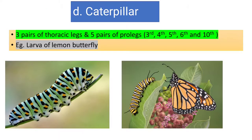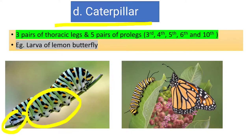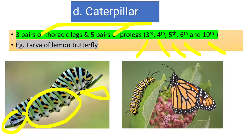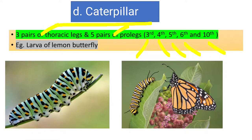Then comes the true caterpillar. In this, there are three pairs of thoracic legs plus five pairs of pro-legs on the abdominal segments — specifically on the third, fourth, fifth, sixth, and tenth segments. Examples shown are the monarch butterfly caterpillar and the lemon butterfly caterpillar.